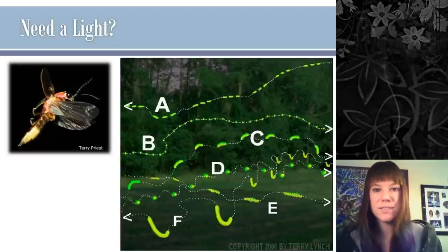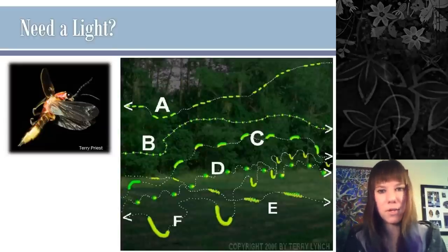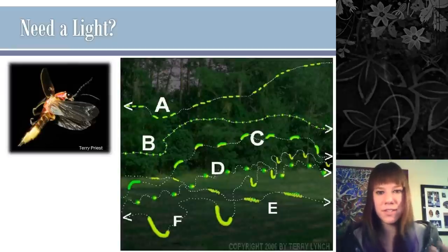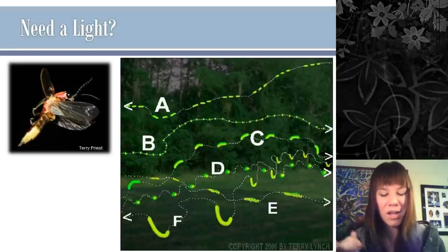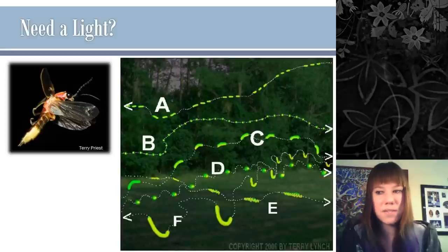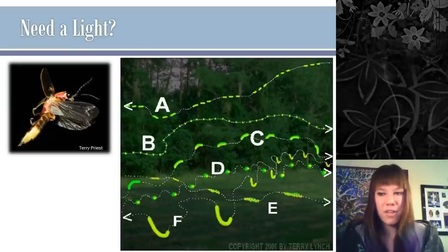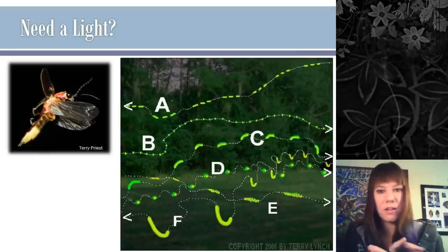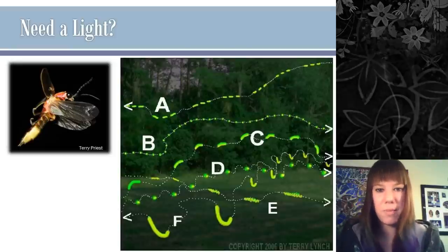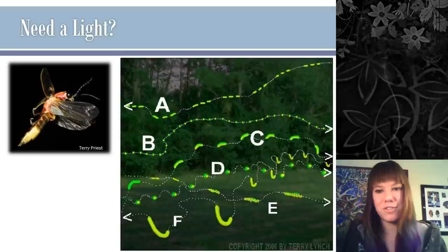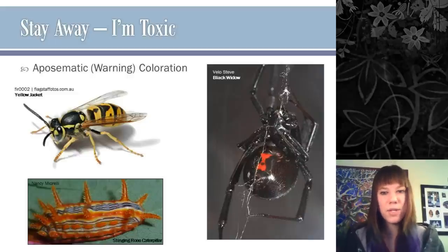Another example of visual communication is light. Fireflies — or lightning beetles to entomologists — flash in the summer, and all those different flashing patterns represent different species. The height at which these organisms fly also indicates different species, so tons of different species can be out at the same time, and females recognize only those flying in the right spot and flashing in the right pattern.